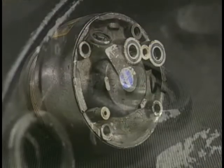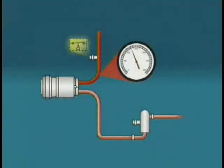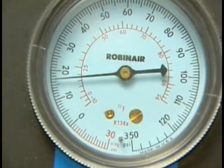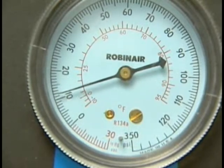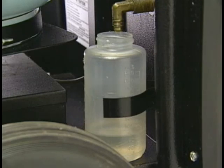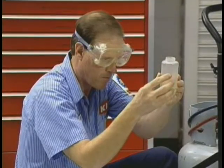Some manufacturers will use a compressor discharge pressure switch to sense the pressure at the compressor discharge port. A normally closed switch, the compressor discharge pressure switch will open the circuit of the compressor when compressor outlet pressure is low. A low compressor discharge pressure is an indication of a low refrigerant charge. As the lubricating oil for the compressor is carried in the refrigerant charge, the discharge pressure switch interrupts current flow to the compressor clutch to prevent damage to the compressor.